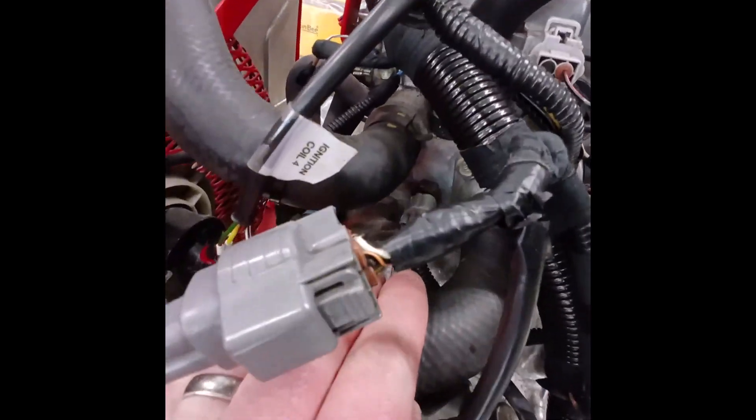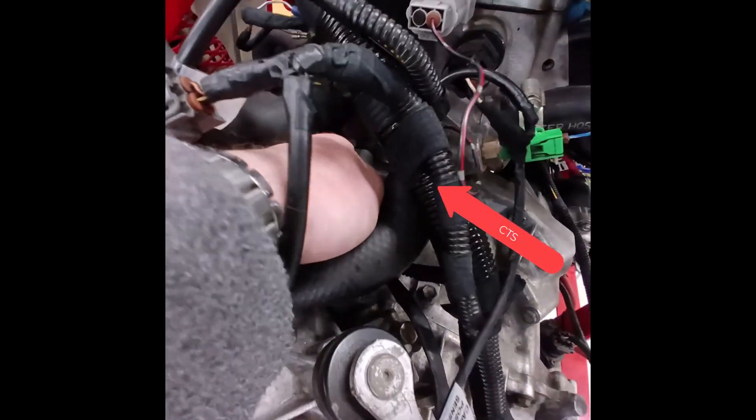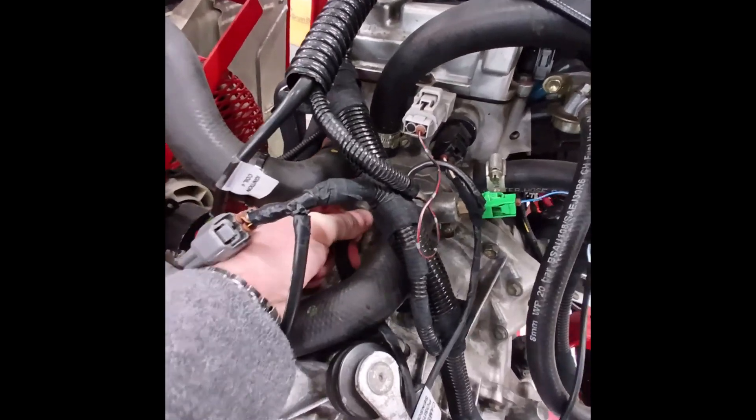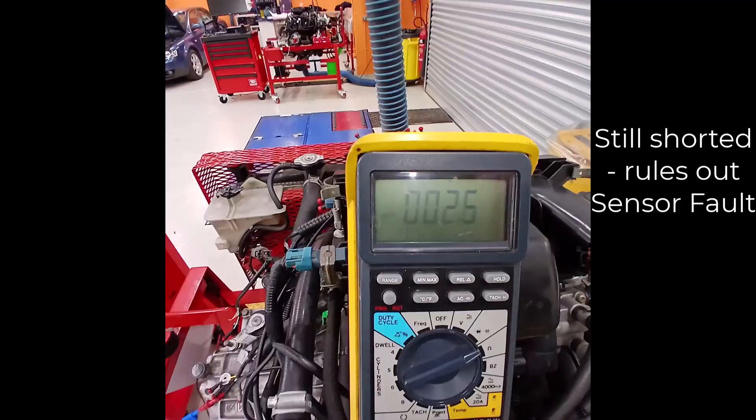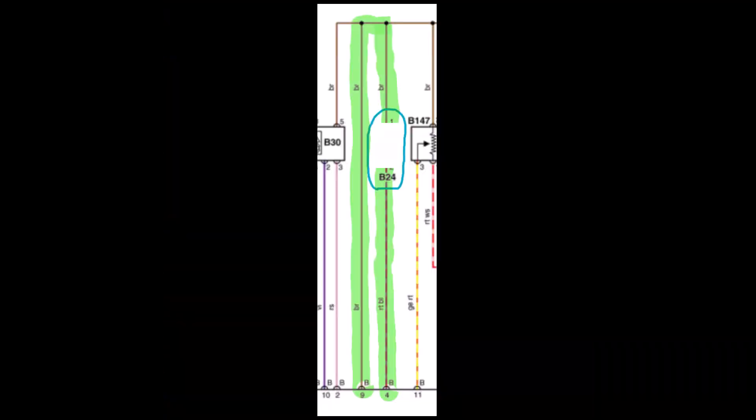Next, we plug out the coolant temperature sensor. And our resistance is still at zero ohms. This proves that the two wires for the coolant temperature sensor are shorted together.